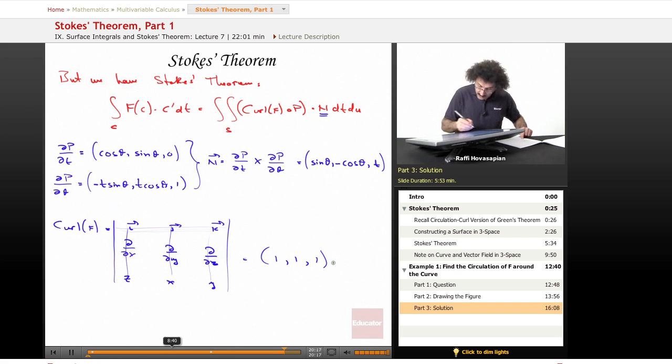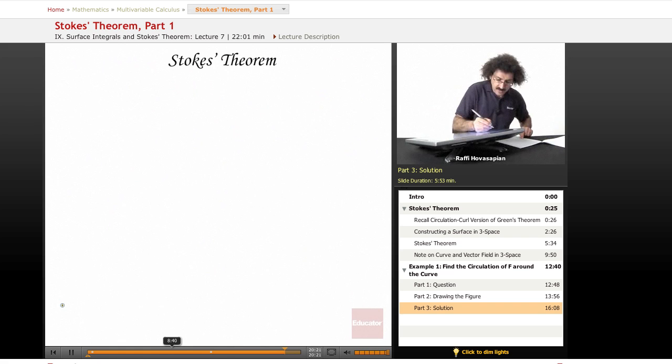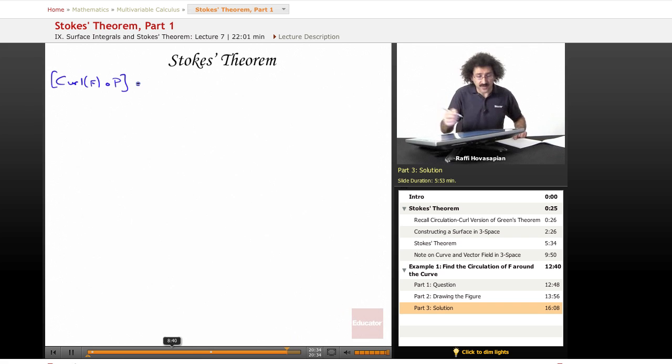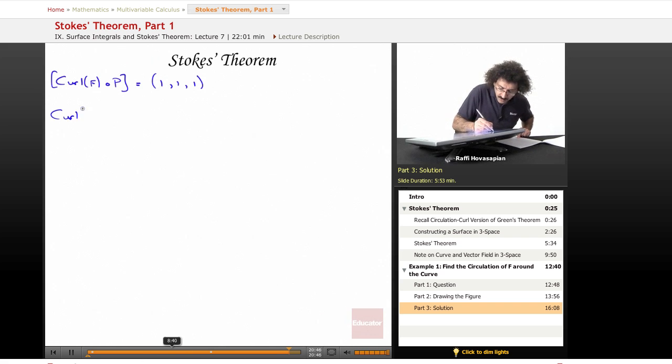Well, I need the curl of F of P. Well, the curl of F is just one, one, one. So it's a constant vector. So there is no composition here. So I can just leave it as one, one, and one. Well, the curl of F of P dotted with the vector n is equal to sine theta minus cosine theta plus t.